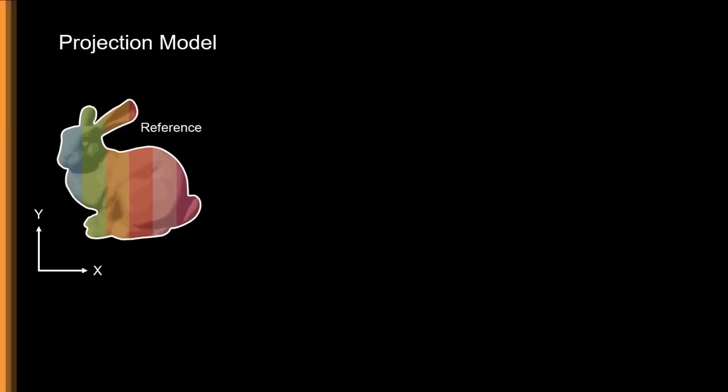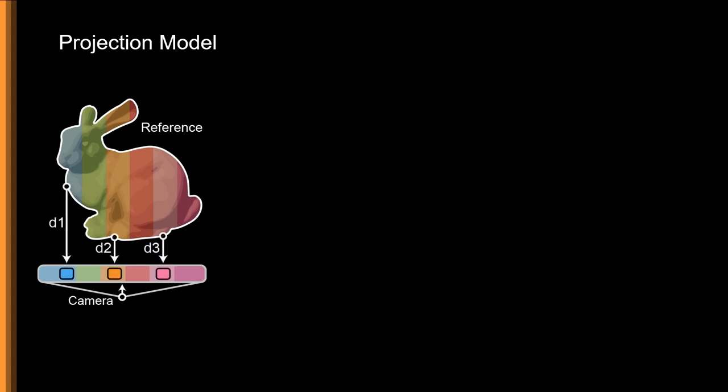To better understand this reprojection step, let's take a look at a 2D example. Let's assume we have a 1D camera, and point on an object at depths D1, D2, and D3.